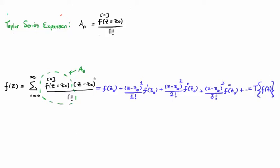So here are the details of the Taylor series expansion. Basically we have the same expressions we had previously, except I've plugged in the functional form for the constants or the coefficients, which are known as the a sub n's.